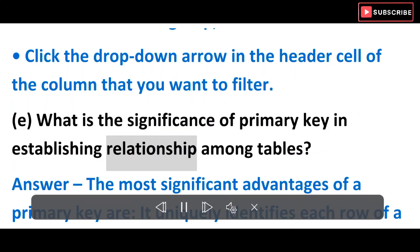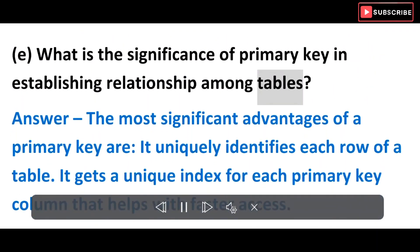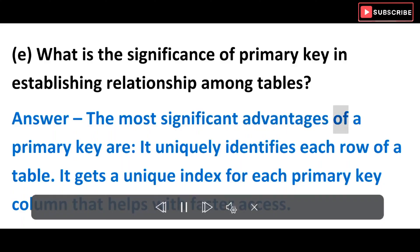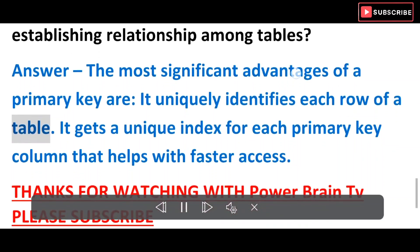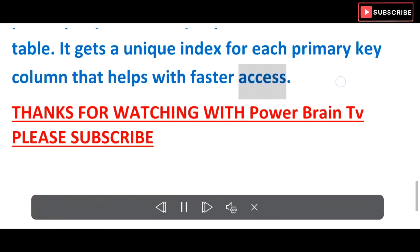E) What is the significance of a primary key in establishing relationships among tables? Answer: The most significant advantages of a primary key are: it uniquely identifies each row of a table, and it gets a unique index for each primary key column, which helps with faster access.